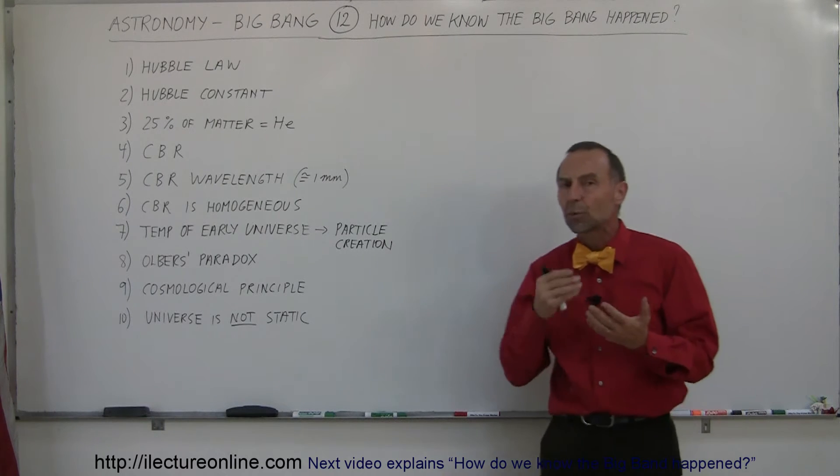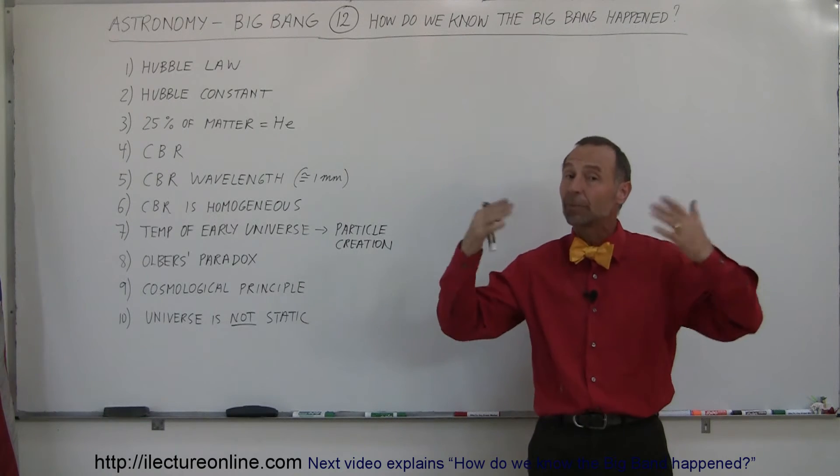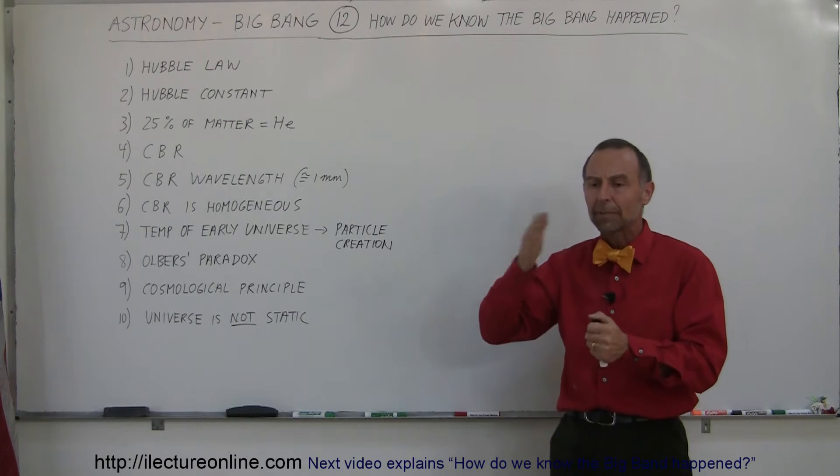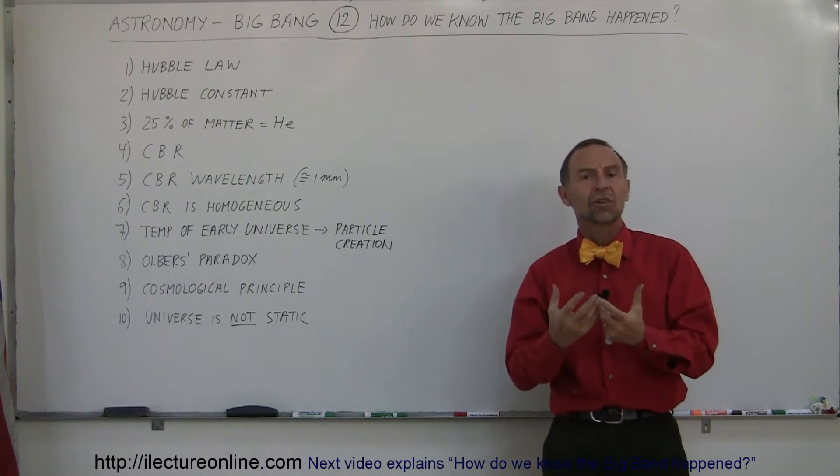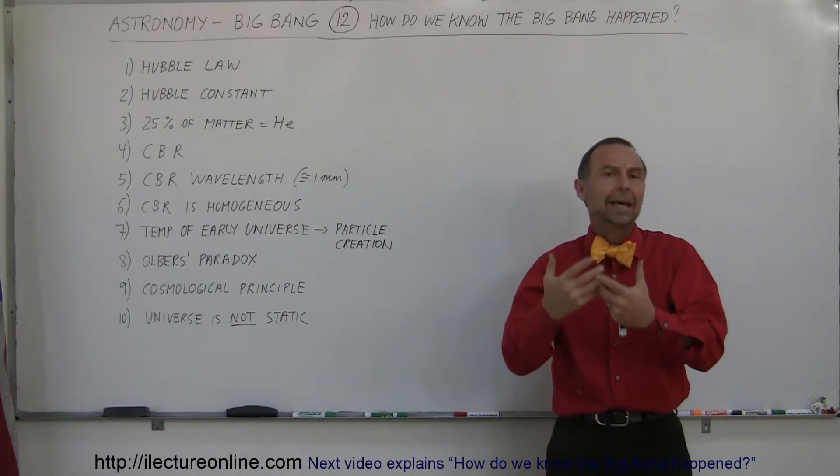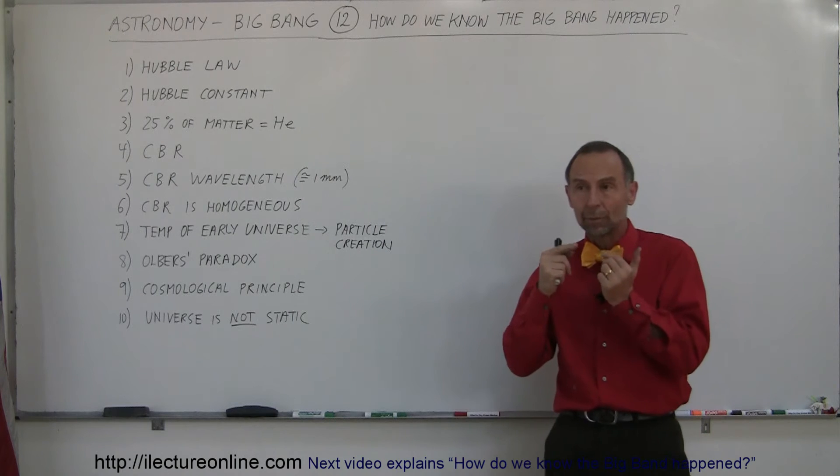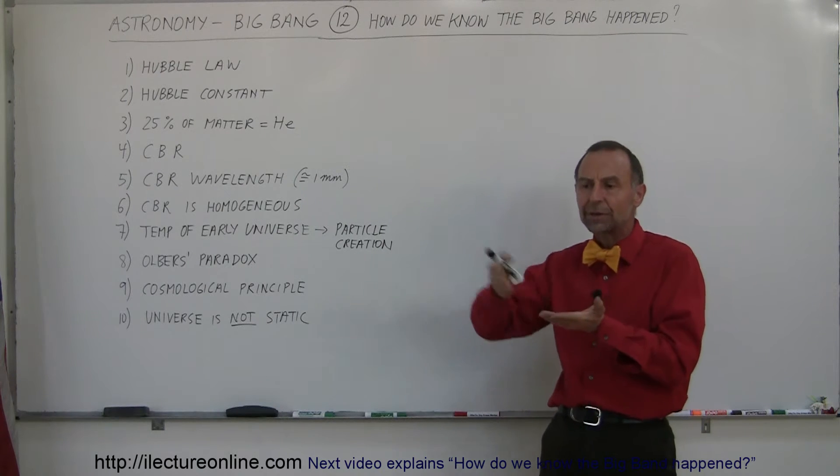Thirdly, we discovered that 25% of all the matter, the visible matter of the universe, is made out of helium. And our theories about the Big Bang would not allow helium to exist. Particles would not form and make helium, not to that amount of abundance. But then we went back and said, well, according to the theory of the Big Bang, the temperature must have been very hot at the very beginning, after matter would have been formed out of radiation.